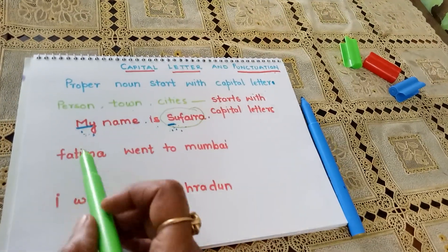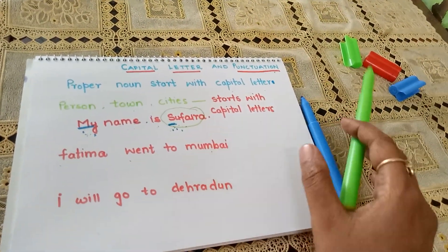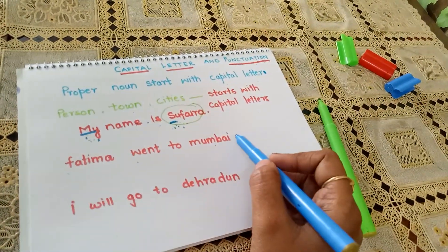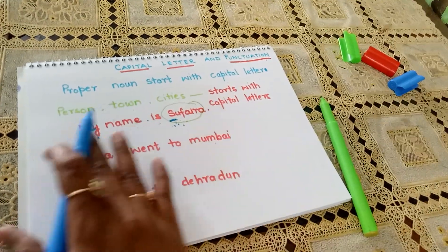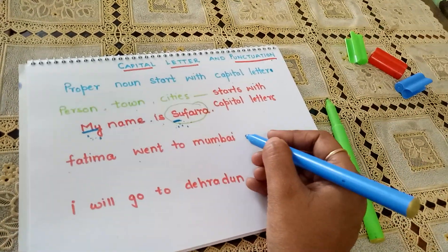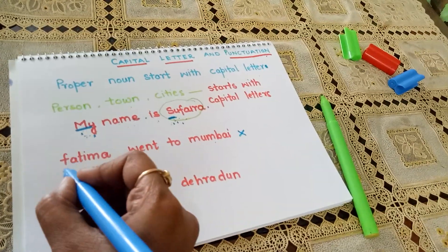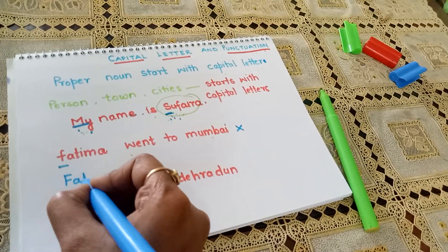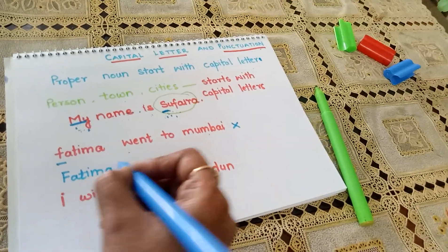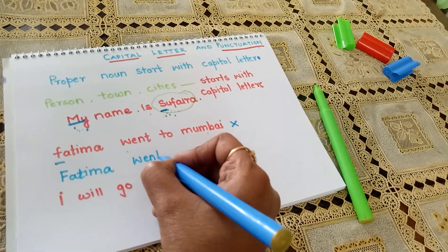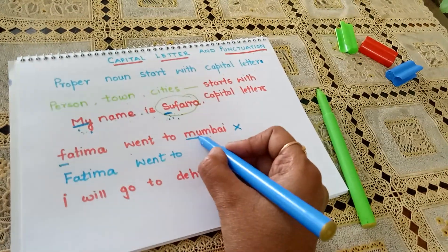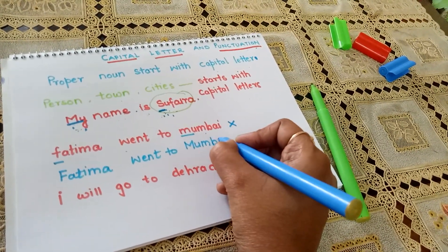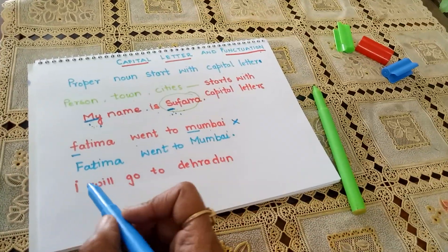Like in this sentence: 'Fatima went to Mumbai.' Now this is written wrong — the sentence and meaning are correct, but it is written in the wrong manner. Correctly, you will write 'Fatima' starting with capital F, followed by small letters. Then 'Mumbai' is a proper noun, so it will be written with a capital letter, and then a full stop.